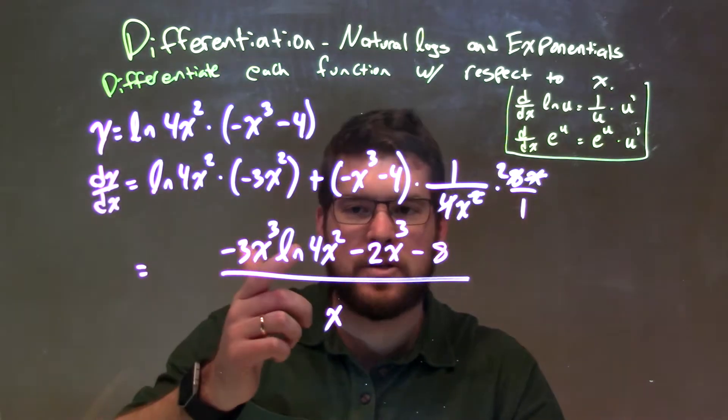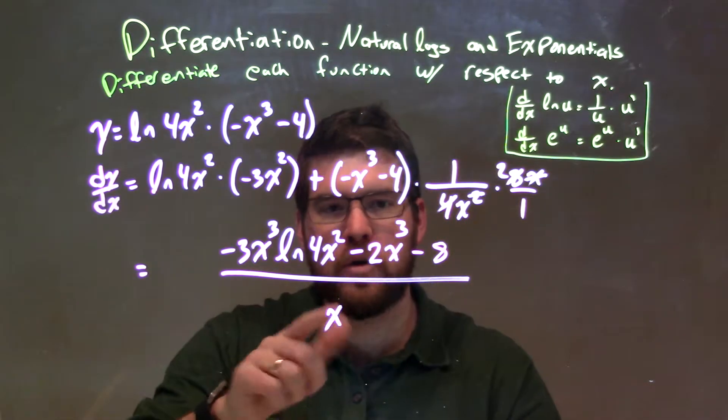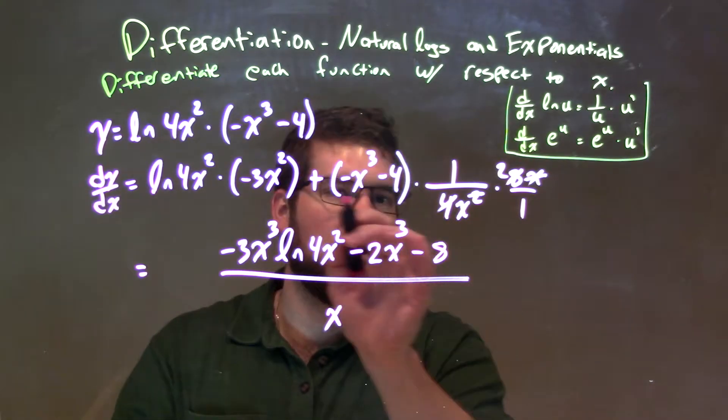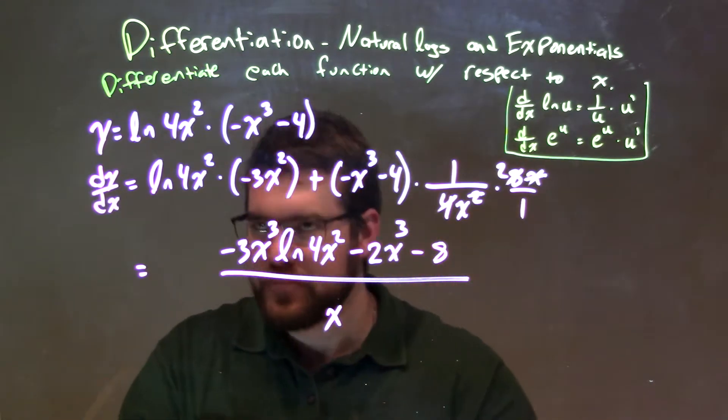Negative 3x to the third times the natural log of 4x squared minus 2x to the third minus 8, all over x. Now, remember, x was underneath all of that. So, let's recap.